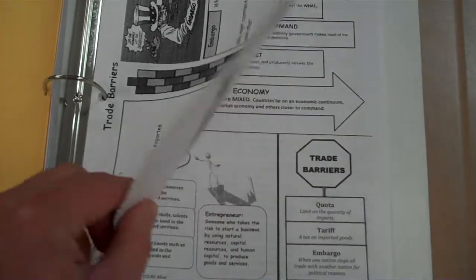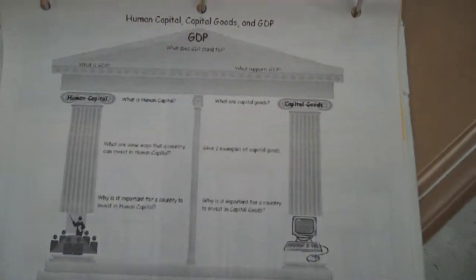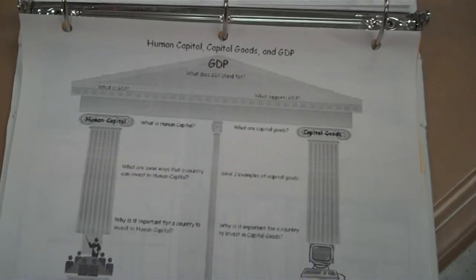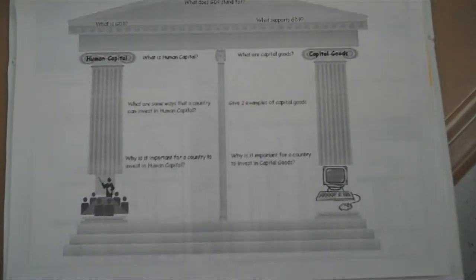Then you have your trade barrier sheet talking about tariffs, quotas, and embargos, so make sure you have that. On the back of that sheet you have your human capital, capital goods, GDP. Make sure you have all of that.